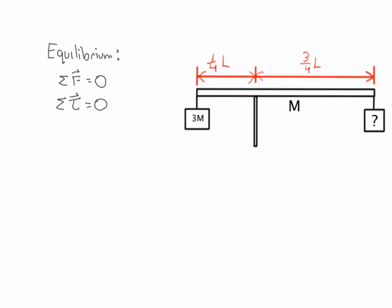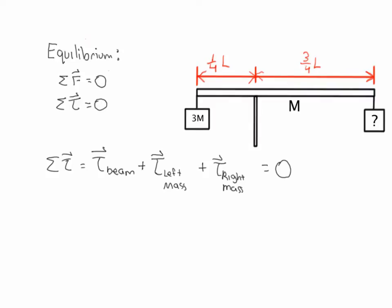We know that in equilibrium the sum of forces is equal to zero, and the sum of torques is equal to zero. We're not really worried about the sum of forces because that is going to add up to zero. What's more interesting in this case is the sum of the torques, and we have three torques here.